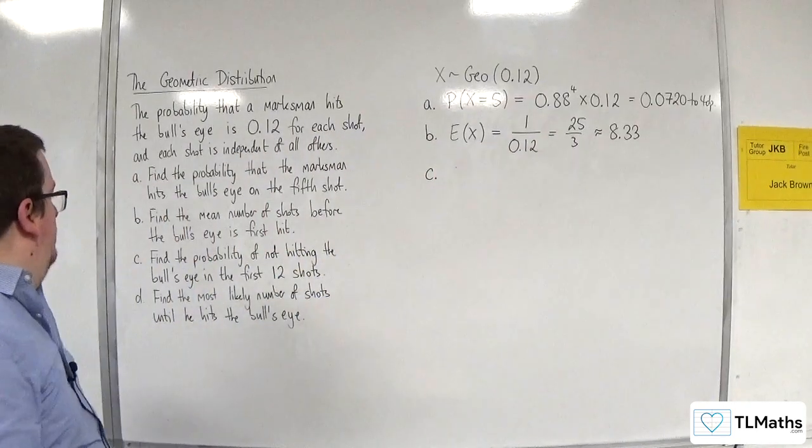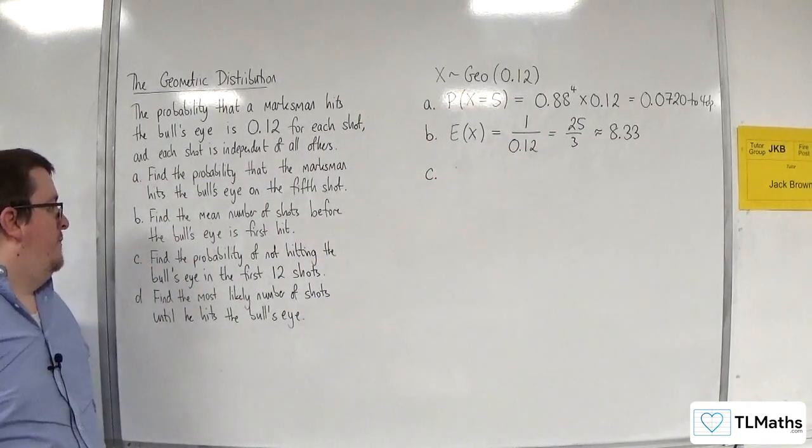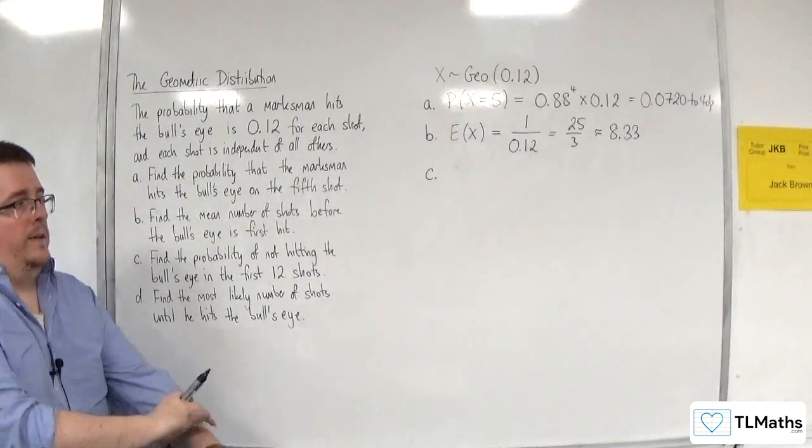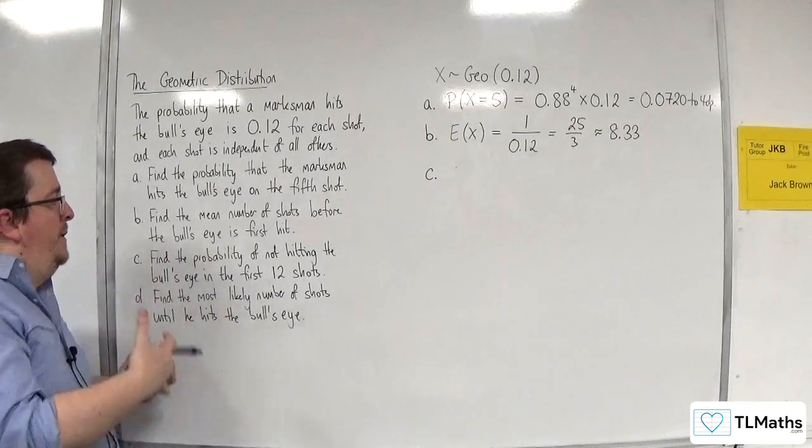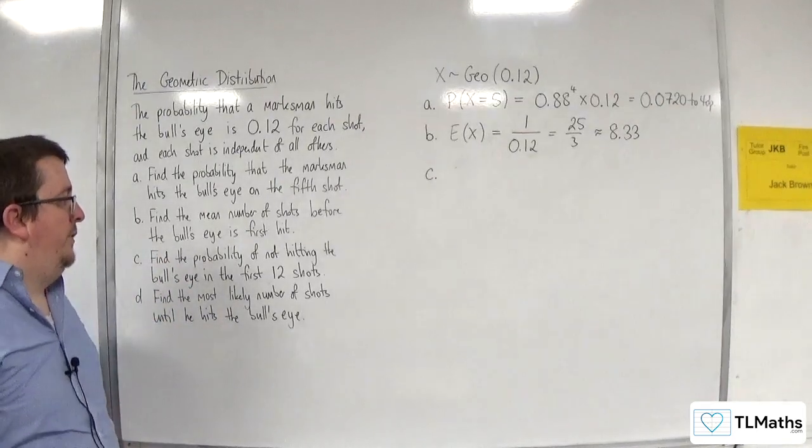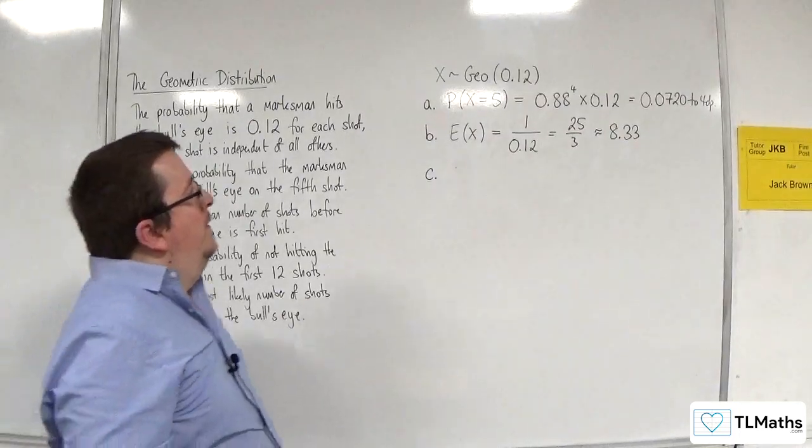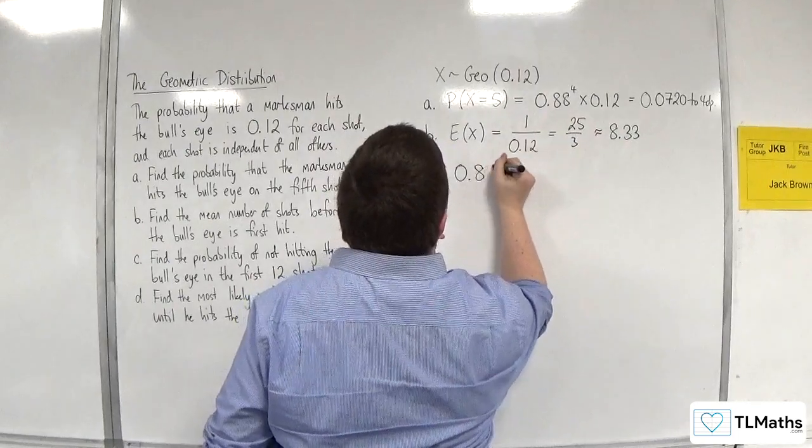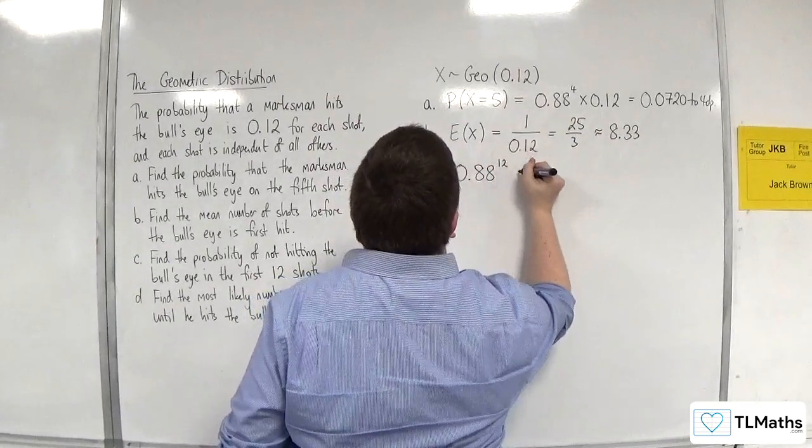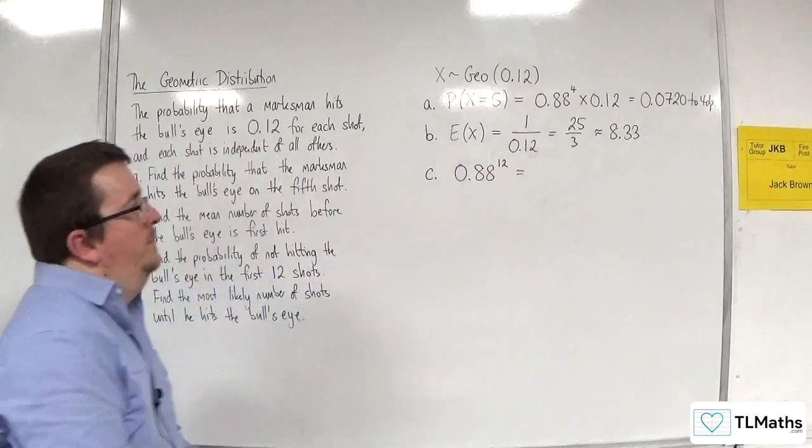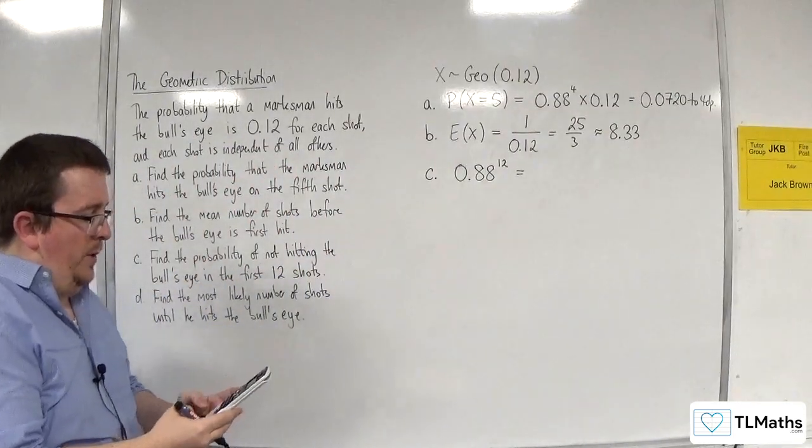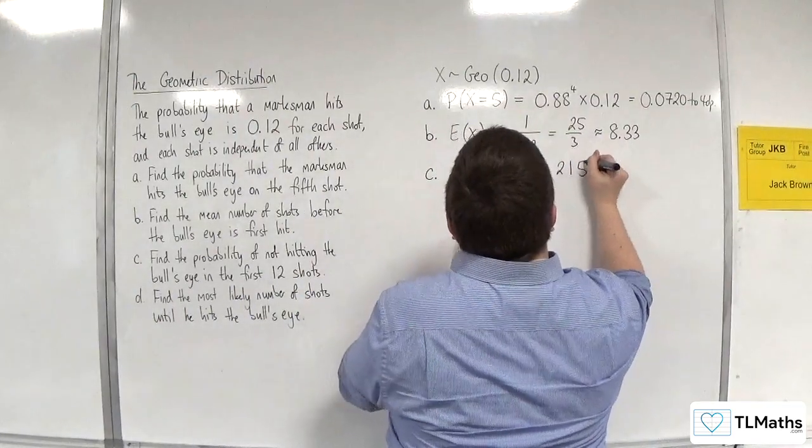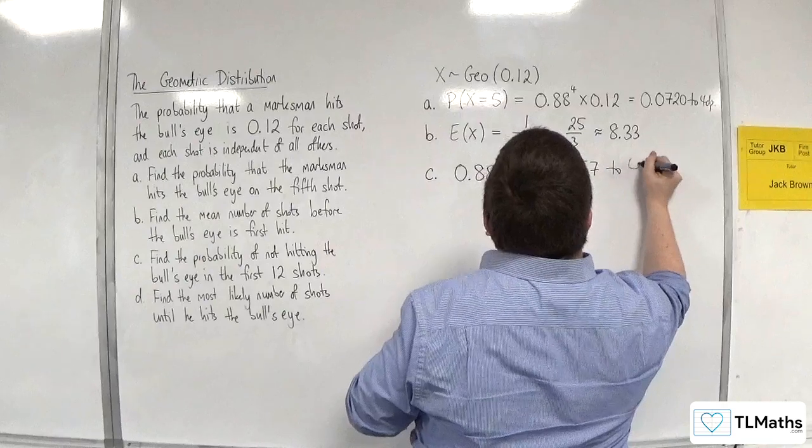Part C: find the probability of not hitting the bullseye in the first 12 shots. So, if the marksman doesn't hit the bullseye in the first 12 shots, then that means we've got a probability of not hitting the bullseye, which is 0.88. And that happens 12 times. So 0.88 to the power of 12. And we get 0.2157 to four decimal places.